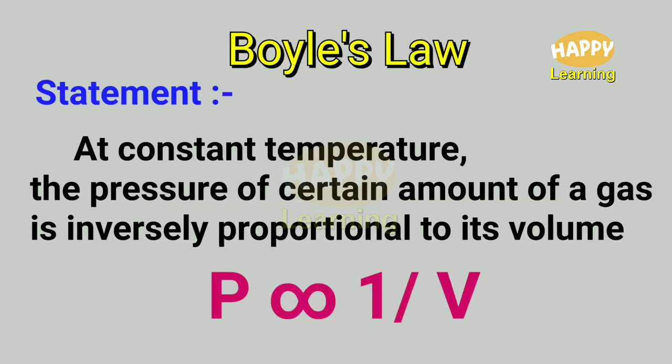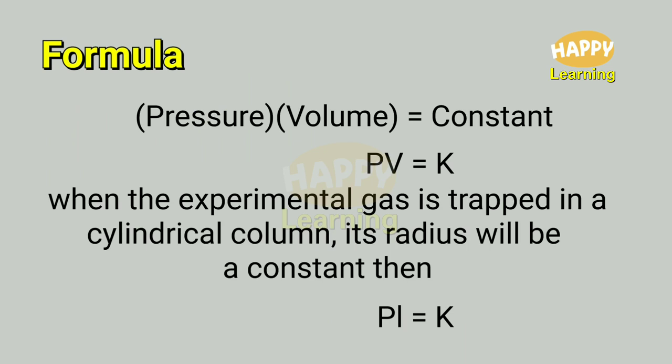Statement: At constant temperature, the pressure of a certain amount of gas is inversely proportional to its volume. P is proportional to 1/V, or PV is equal to constant. When the experimental gas is trapped in a cylindrical column, its radius will be a constant, so PL is equal to constant, where L is the length of the air column.